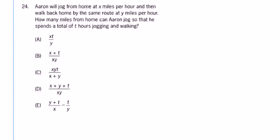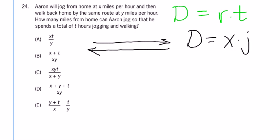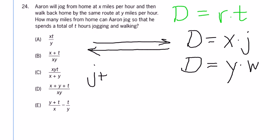The formula that you need to know is distance equals rate times time. Aaron jogs, and then he walks, and each time he walks the same distance as he jogs. So that means whatever distance he travels, it's going to be equal to x miles per hour times the time he spends jogging, which I'll use j for. And that same distance is going to be equal to y miles per hour times the time he spends walking, which I'll use w for. And j plus w is t.